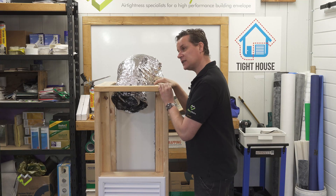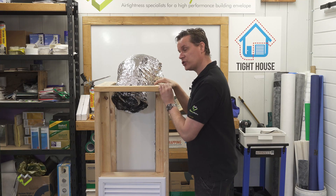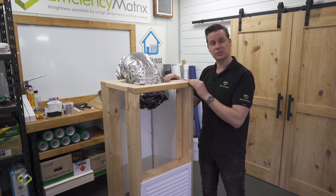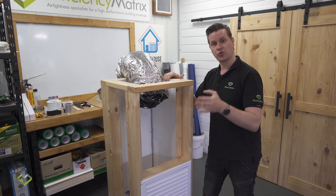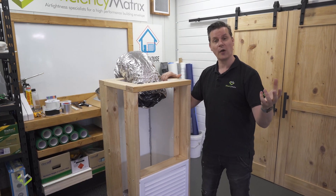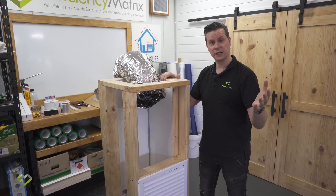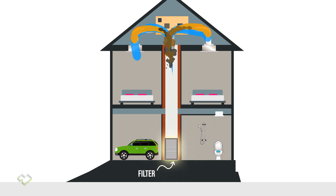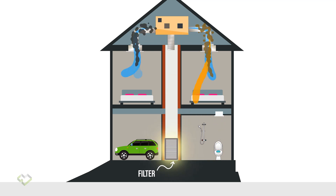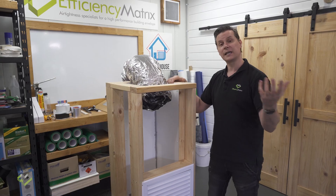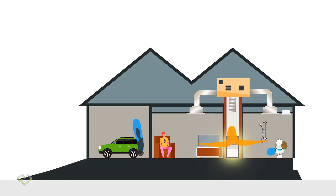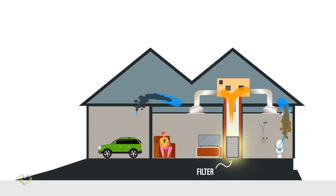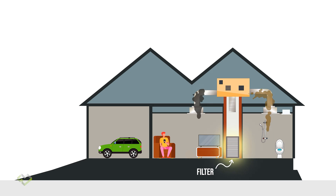If your ducted heating return is situated close to your toilet or your garage with open air connectivity, you could be sucking air from your toilet or your garage — where there's a running vehicle — sucking carbon monoxide into the return and distributing it throughout your home.